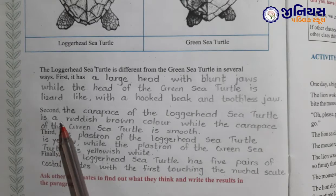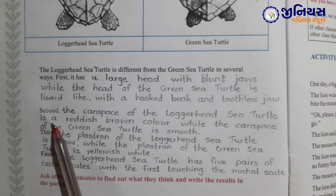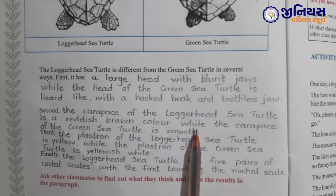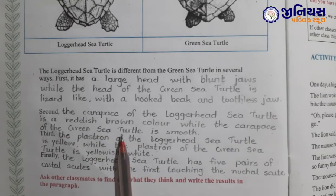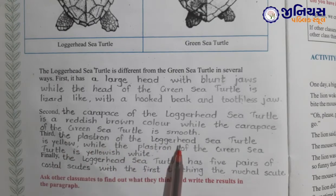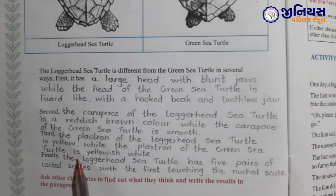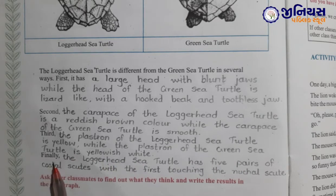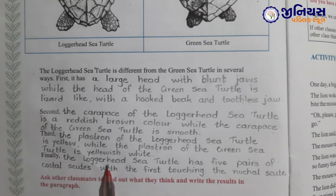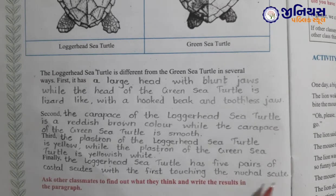Second, the carapace of the loggerhead sea turtle is a reddish-brown color, while the carapace of the green sea turtle is smooth. Third, the plastron of the loggerhead sea turtle is yellow, while the plastron of the green sea turtle is white. And finally, the loggerhead sea turtle has five pairs of coastal scutes with the fourth touching the nuchal scute.